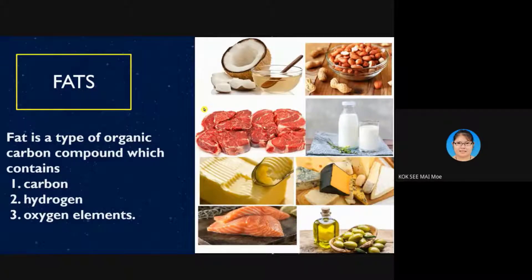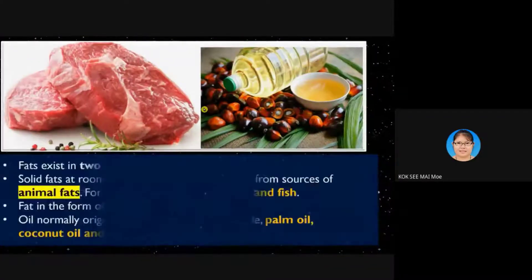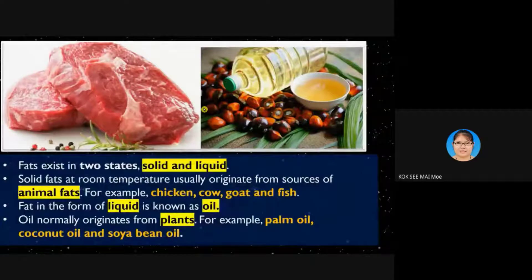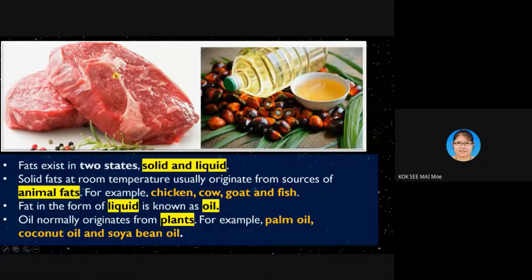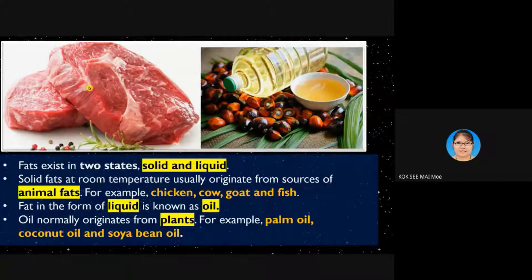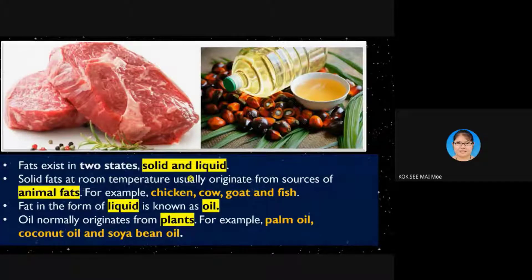Let's see some characteristics of fats. First, they exist in two states: solid and liquid. You can see in the diagram — the left side shows meat, which is a solid fat, and the right side shows palm oil, which is a liquid fat. Solid fat at room temperature usually originates from animal fat, for example chicken, cow, goat, and fish.